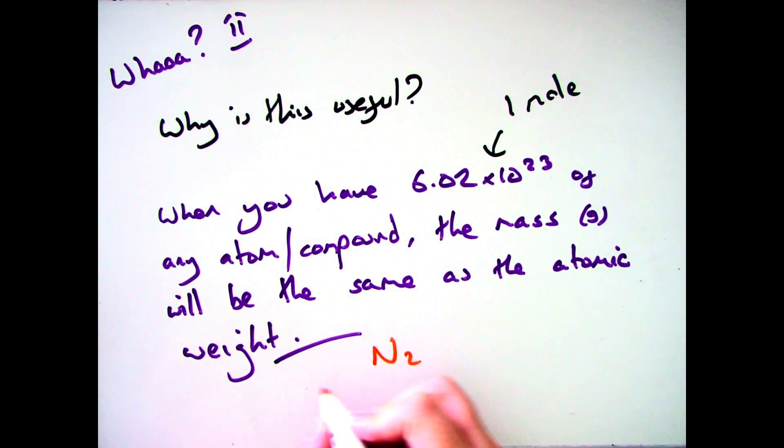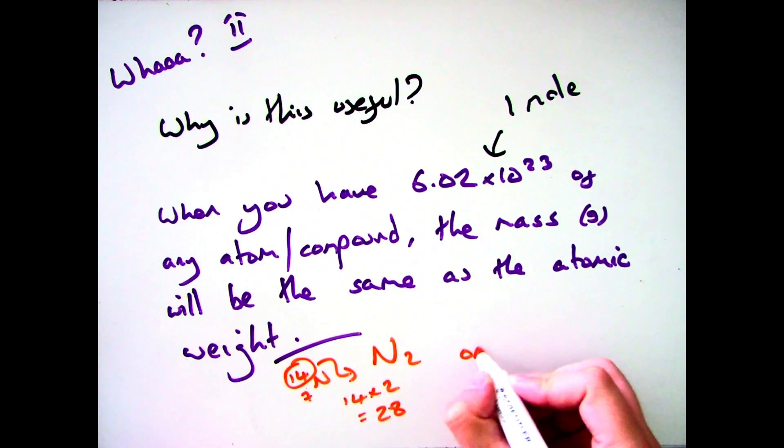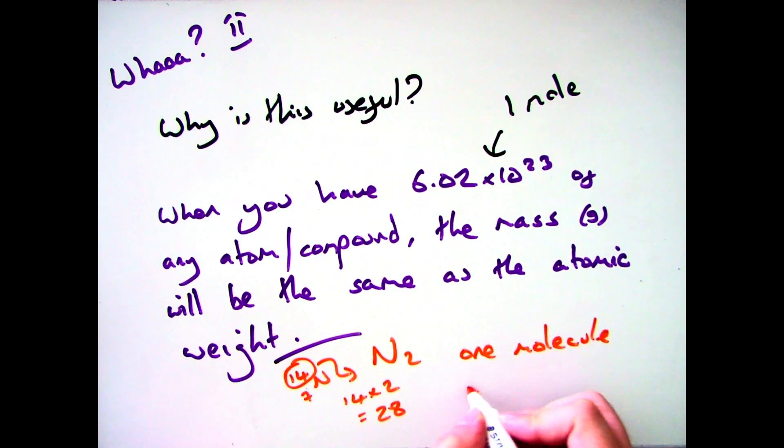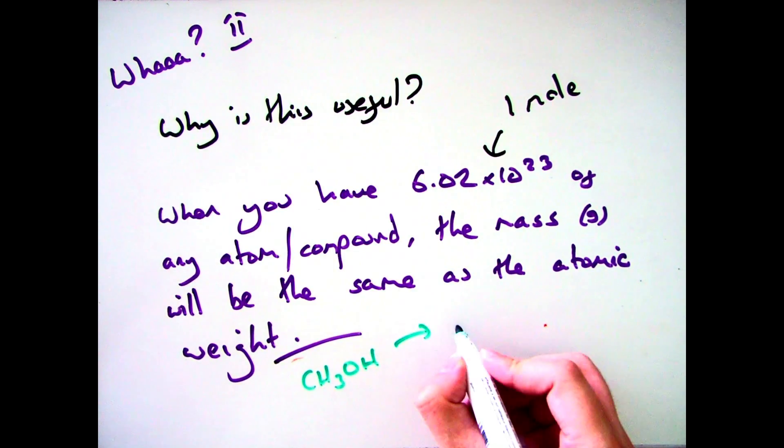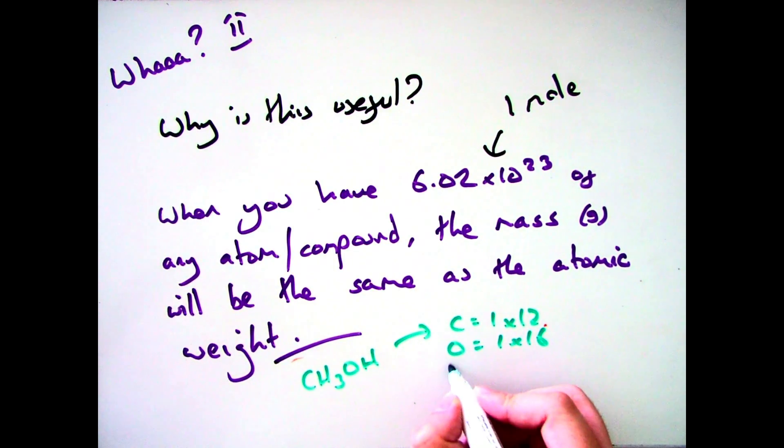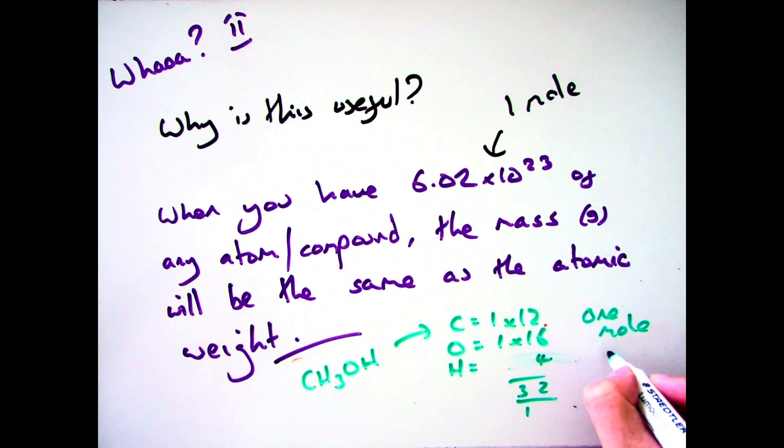This works the same with molecules, so in the case of N2 which has got two nitrogen atoms and a molecular mass of 28, therefore one mole of nitrogen molecule would give you a mass of 28 grams. And finally, the same thing happens with compounds. So if I had methanol which is CH3OH, I have one carbon, one oxygen, and four hydrogens, which gives me an overall molecular mass of 32. Therefore one mole of methanoic acid would give me a mass of 32 grams.